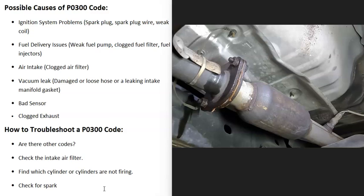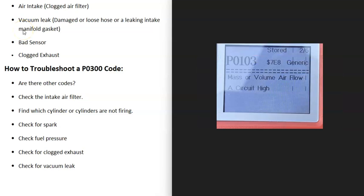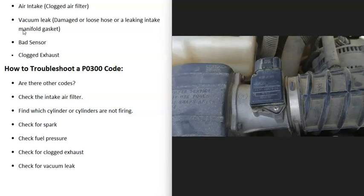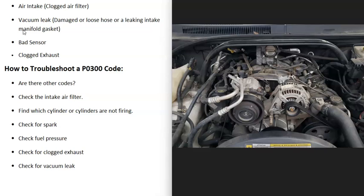To troubleshoot a P0300 code, the first thing to do is check for any other codes. For example, if you're also getting a P0103 (mass or volume airflow circuit high), that points to an issue with the MAF sensor or air going into the engine. Also be sure to check your intake air filter — if it's really dirty and clogged, it could be blocking airflow and causing problems.